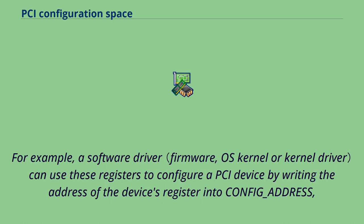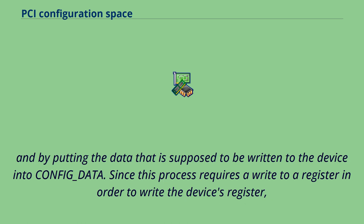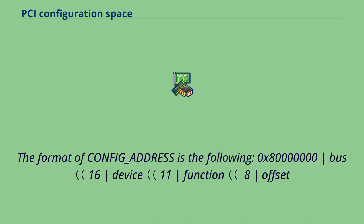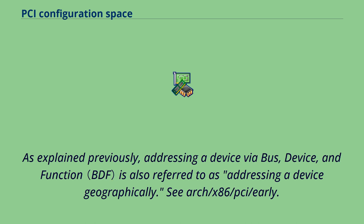A software driver can use these registers to configure a PCI device by writing the address of the device's register into config_address and putting the data to be written into config_data. Since this process requires a write to a register in order to write the device's register, it is referred to as indirection. The format of config_address is: 0x80000000 | (bus << 16) | (device << 11) | (function << 8) | offset. Addressing a device via bus, device, and function is also referred to as geographical addressing.